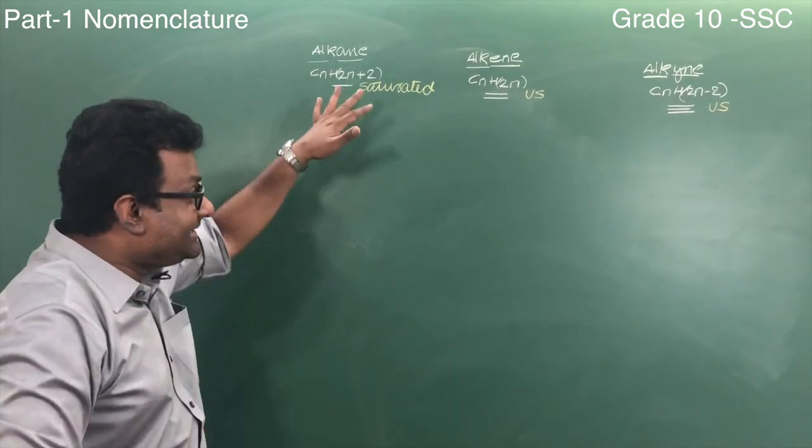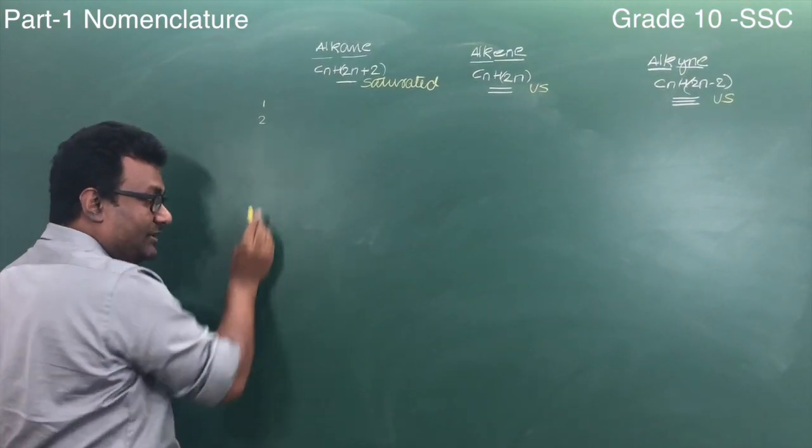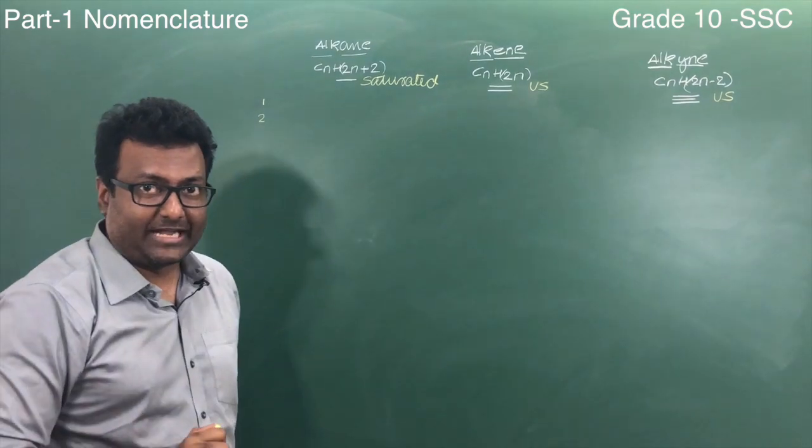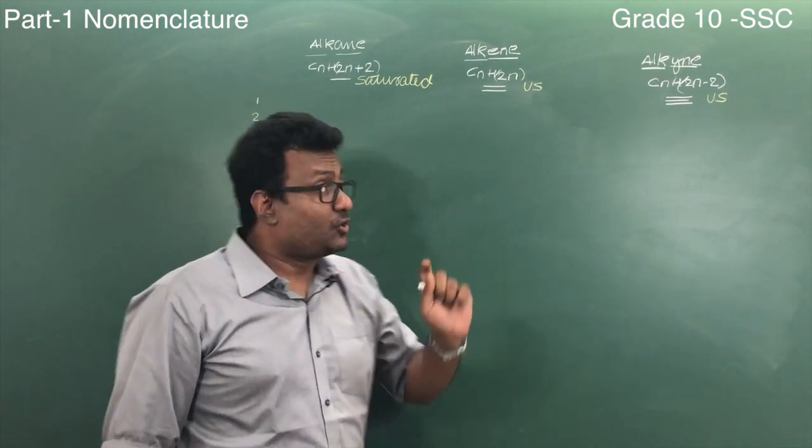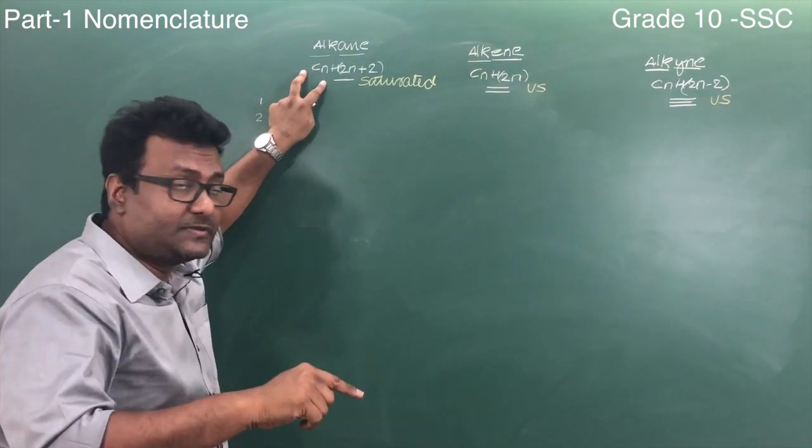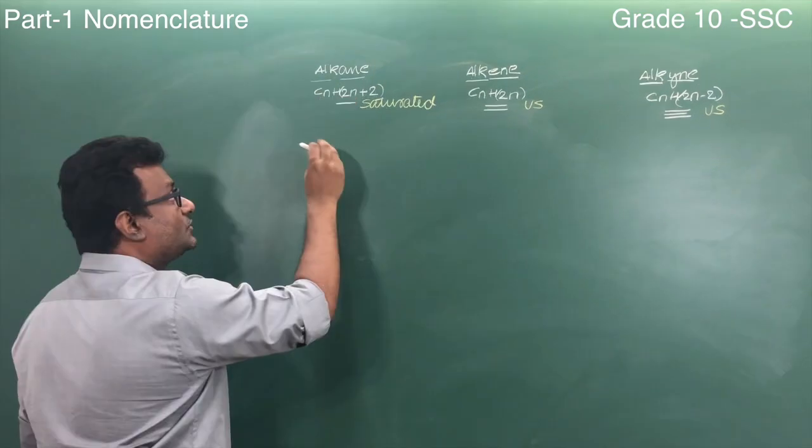Let's look at the example. What happens when n is equal to 1 to 10? What is this n? N is the number of atoms. When n is written next to C, it's the number of carbon atoms. When n is written here, it is the number of hydrogen atoms.